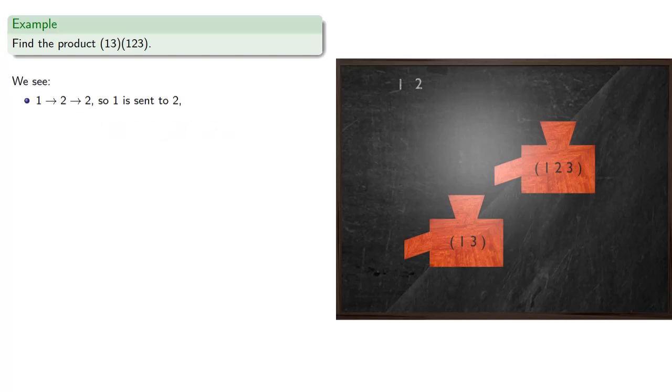Again starting at 2, we see the first cycle sends 2 to 3. And then the second cycle sends 3 to 1. And so 2 is sent to 1, which is where we started. And so our cycle so far is (1,2).